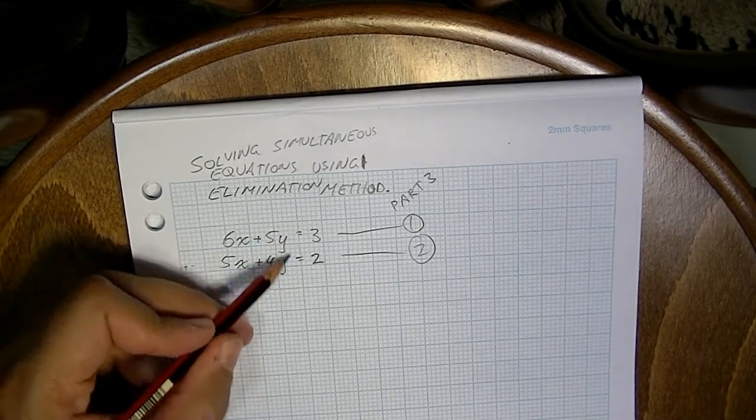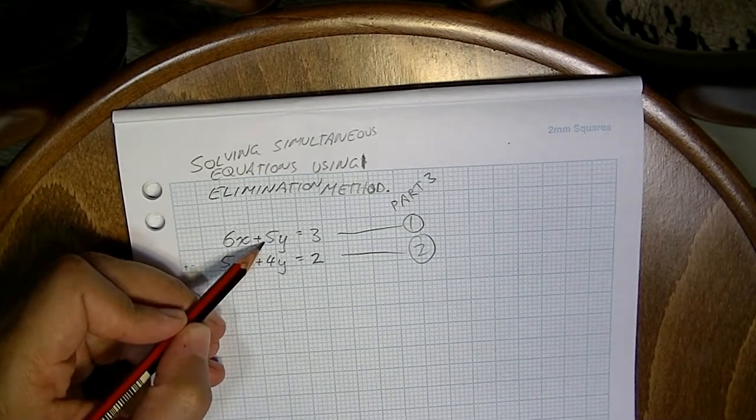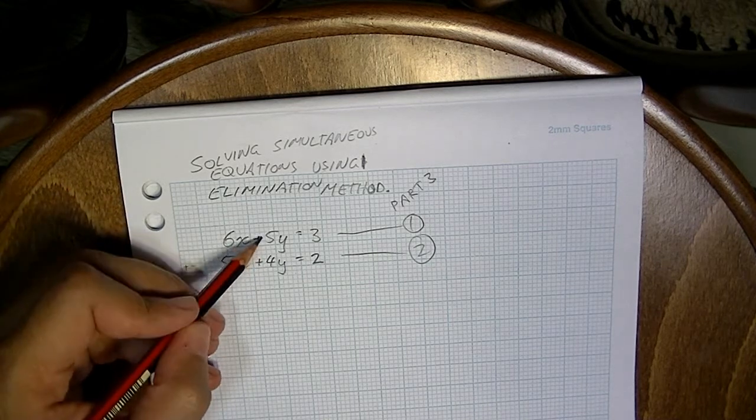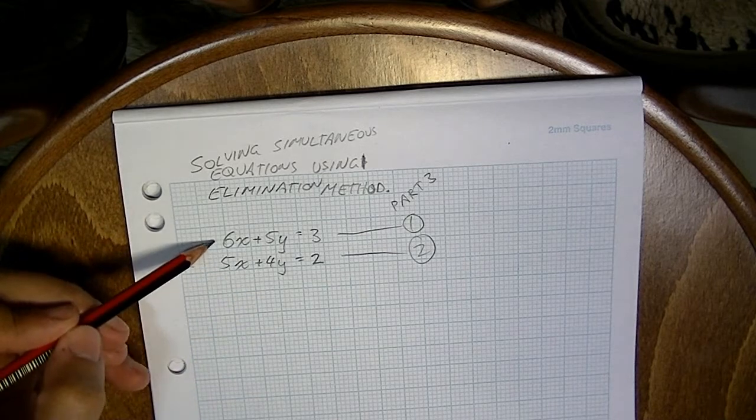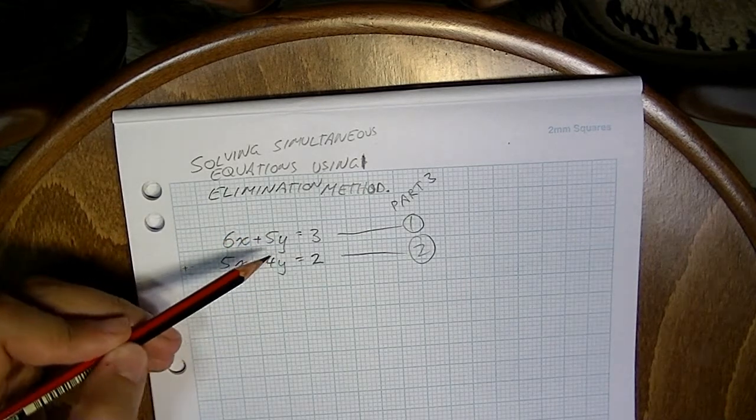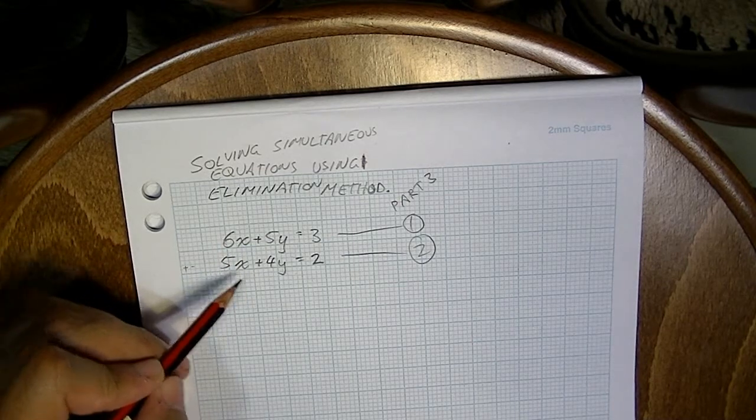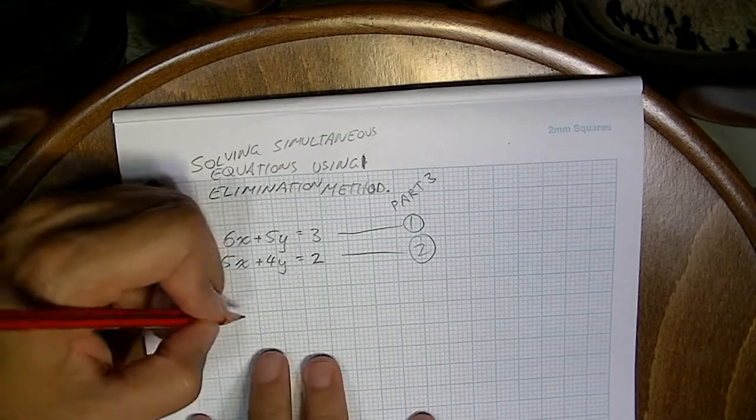What I could do however is do something to both of those equations. Let's say I wanted to eliminate the y's. I'd look for a common multiple of 5 and 4, in this case 20. And then I'd multiply equation one by whatever it took to make 5y equal to 20y. In this case I'd multiply by 4. And I'd multiply my second equation by whatever it took to get to 20, in this case 5. So we can do that.